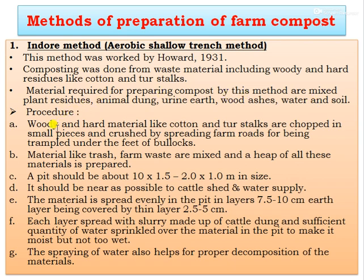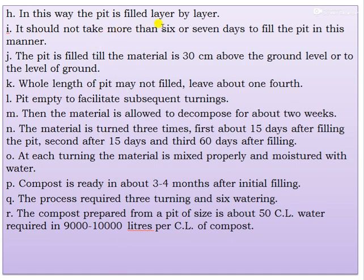In the detailed procedure, woody and hard material like cotton and tur stalks are chopped into small pieces and crushed by spreading on farm roads to be trampled under the feet of bullocks. The material like trash and farm waste is mixed and a heap is prepared. The pit should be about 10 by 1.5 to 2 by 1 meter in size and should be near the cattle shed and water supply. The material is spread evenly in the pit in layers of 7.5 to 10 cm, each layer covered by a thin layer of 2.5 to 5 cm. Each layer is sprayed with a slurry of cattle dung and sufficient water to make it moist but not too wet. In this way the pit is filled layer by layer; it should not take more than 6 to 7 days to fill the pit.